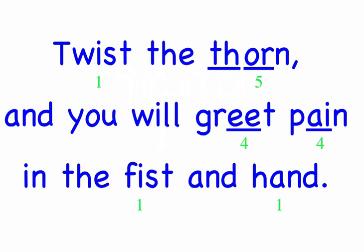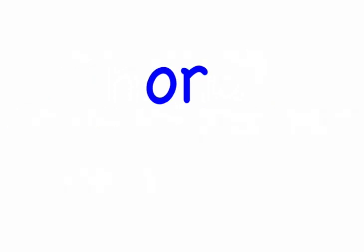And our final sentence, nine: the north plains have snow, rain, and the screech of crows. The north. North — three sounds: N, OR, T. North.